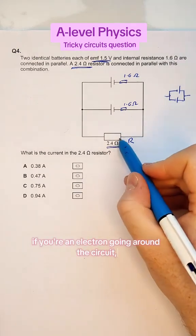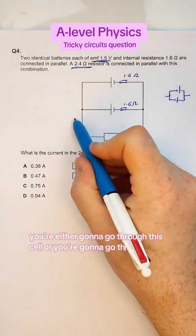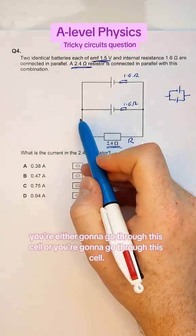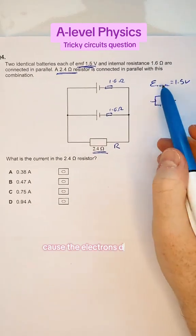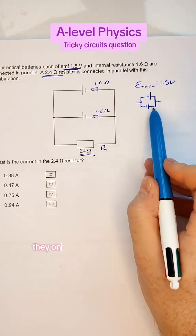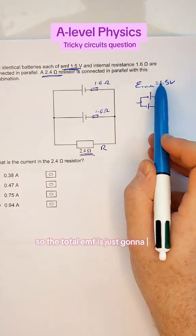If you're an electron going around the circuit, you're going to come up here, you're either going to go through this cell or through this cell. So overall, the EMF of the total combination is just going to be 1.5 volts because the electrons don't ever go through both cells, they only go through one of them. So the total EMF is just 1.5.